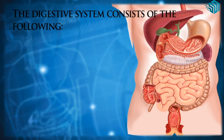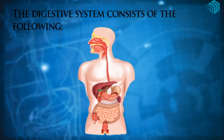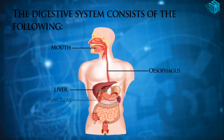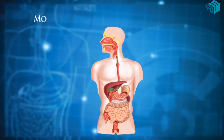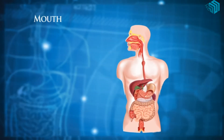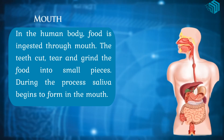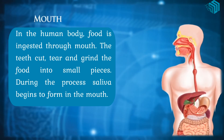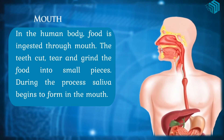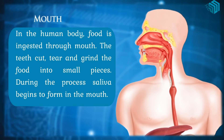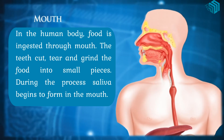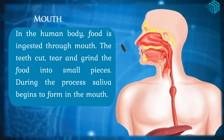The structure and function of human digestive organs. Mouth: in the human body, food is ingested through the mouth. The teeth cut, tear and grind the food into small pieces. During this process, saliva begins to form in the mouth.